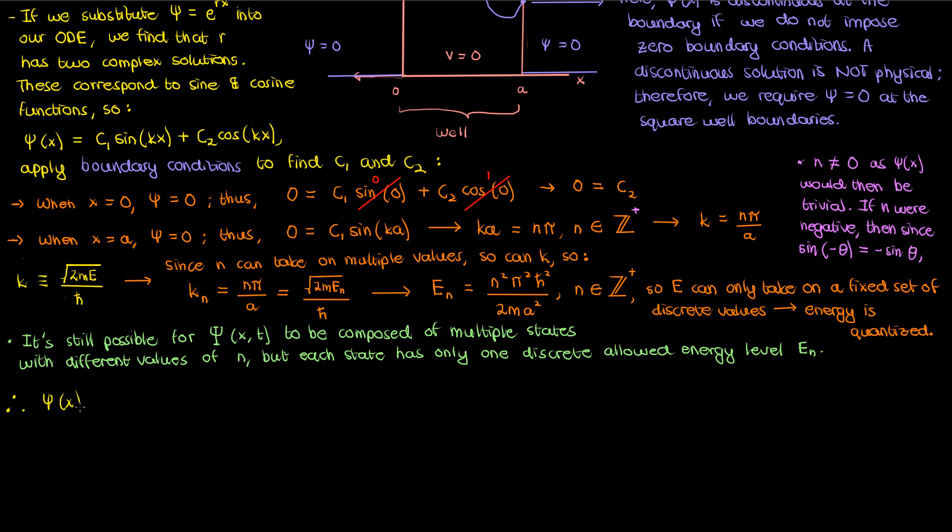Anyway we now have our small psi given by the following equation. C1 however is still an unknown constant. But how do we solve for it? Well we use the normalization condition.